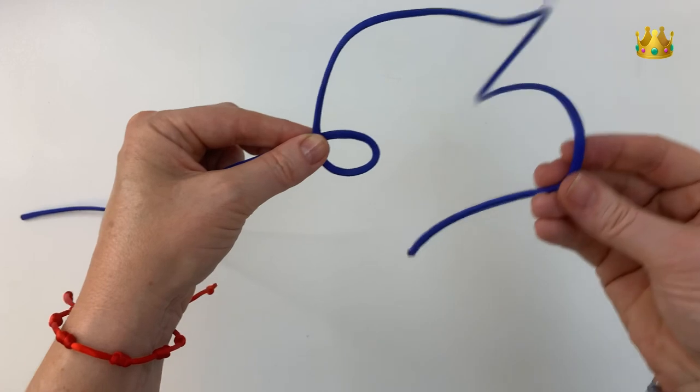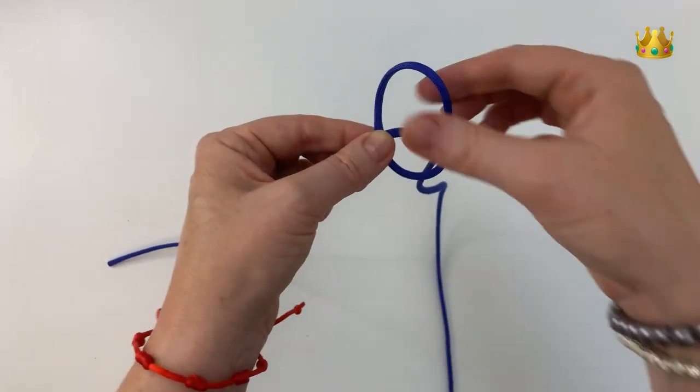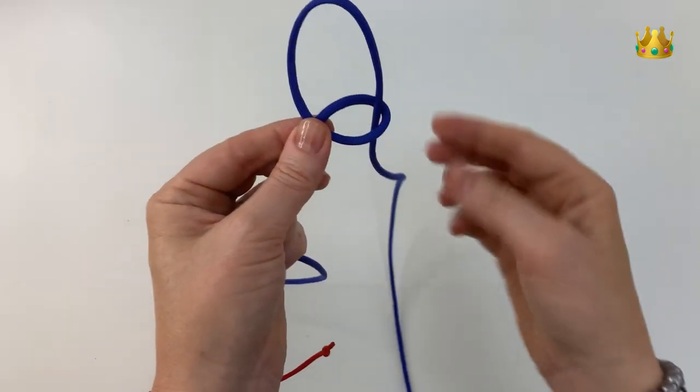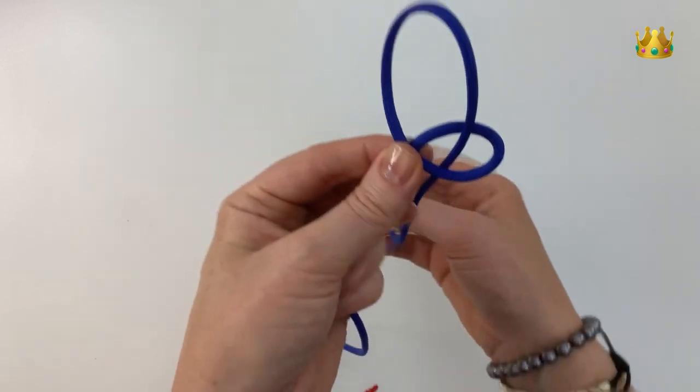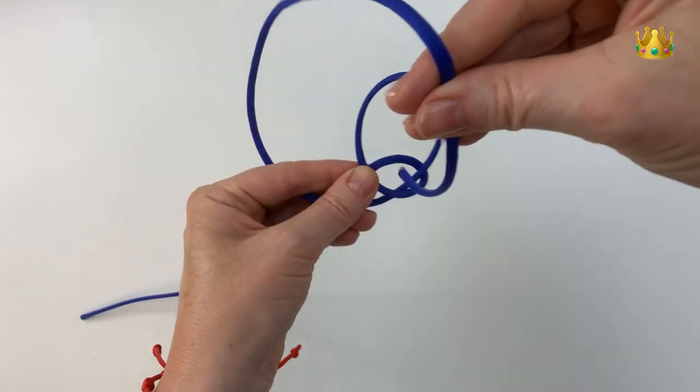Holding that loop and now with the right side cord we're going to place the end down the loop. Now with this right side cord we're going to bring it around the back to the left and then place the end down the same loop.